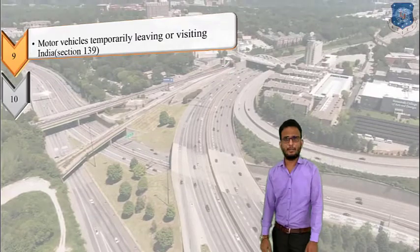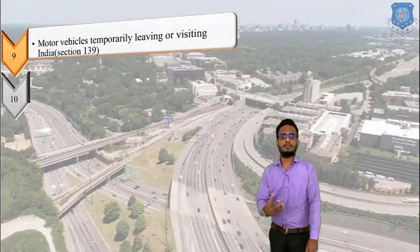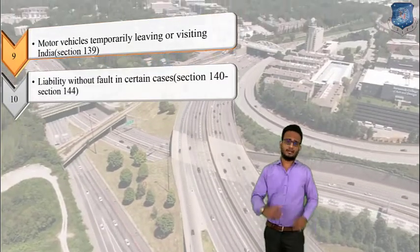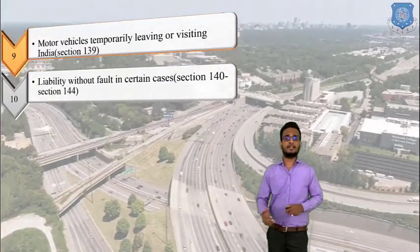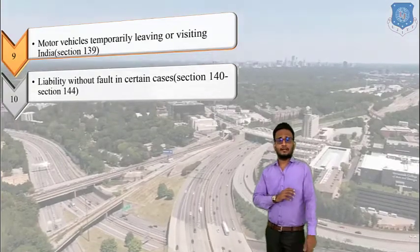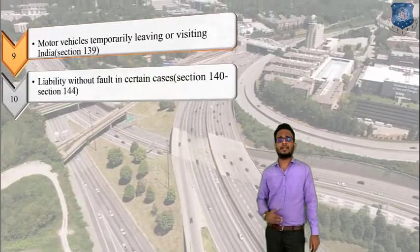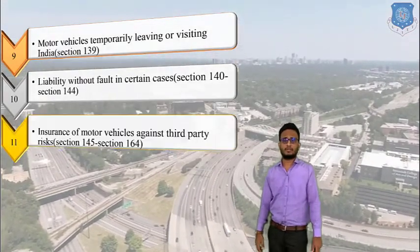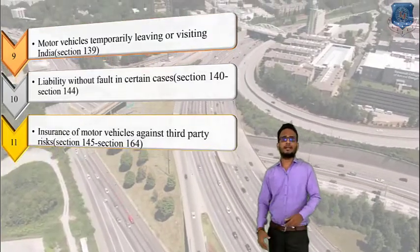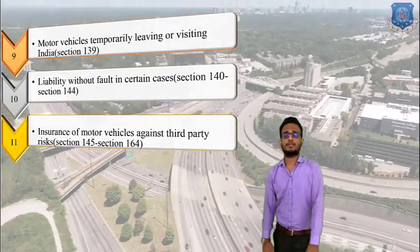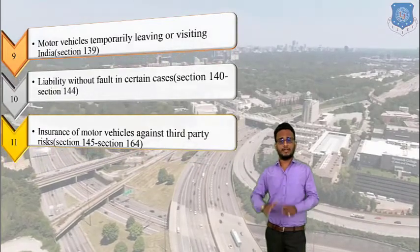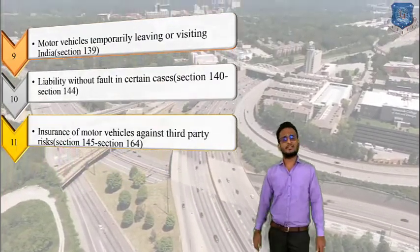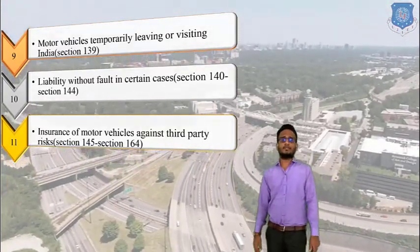Chapter number 9 discusses motor vehicles temporarily leaving or visiting India, beginning from section 139. Chapter number 10 covers liability without fault in certain cases — both chapters deal with rules for diplomats and delegates visiting India or international countries. Chapter number 11 covers insurance of motor vehicles against third party risk, with sections 145 and 146. Third party insurance is necessary for 2-wheelers, 3-wheelers, 4-wheelers, and all multi-axle vehicles.